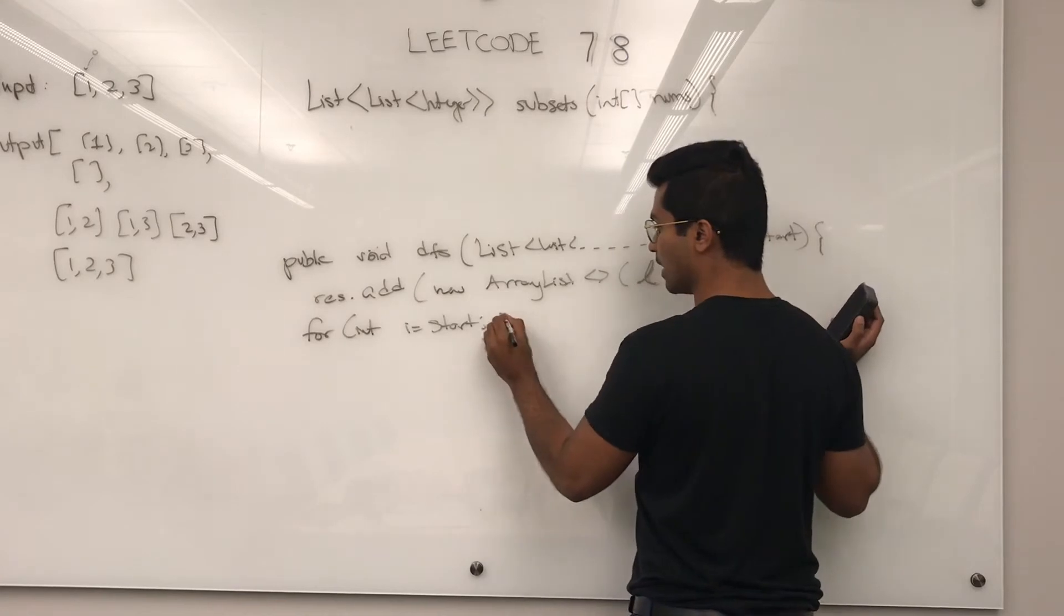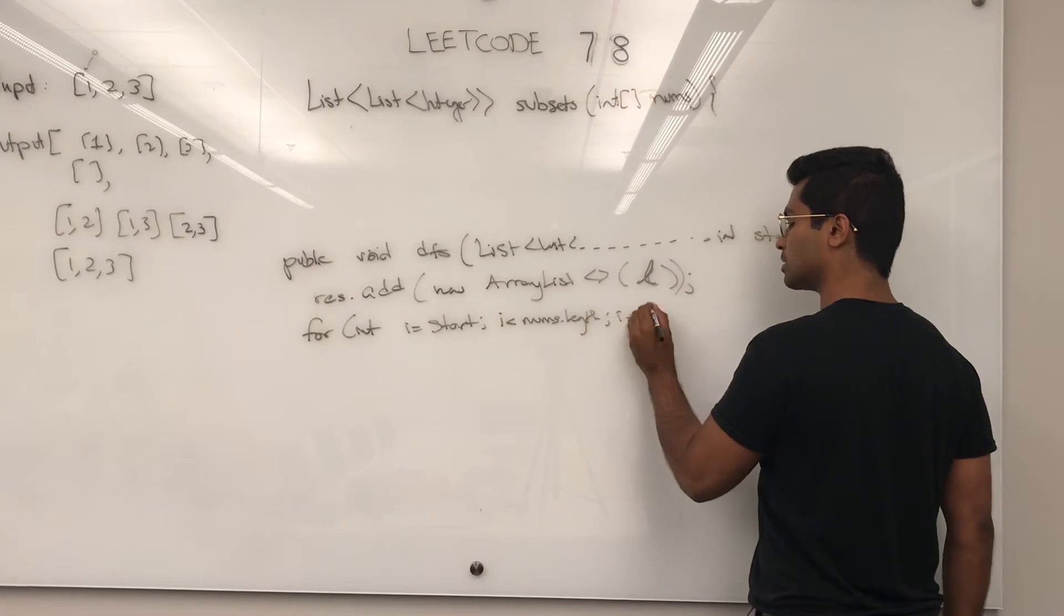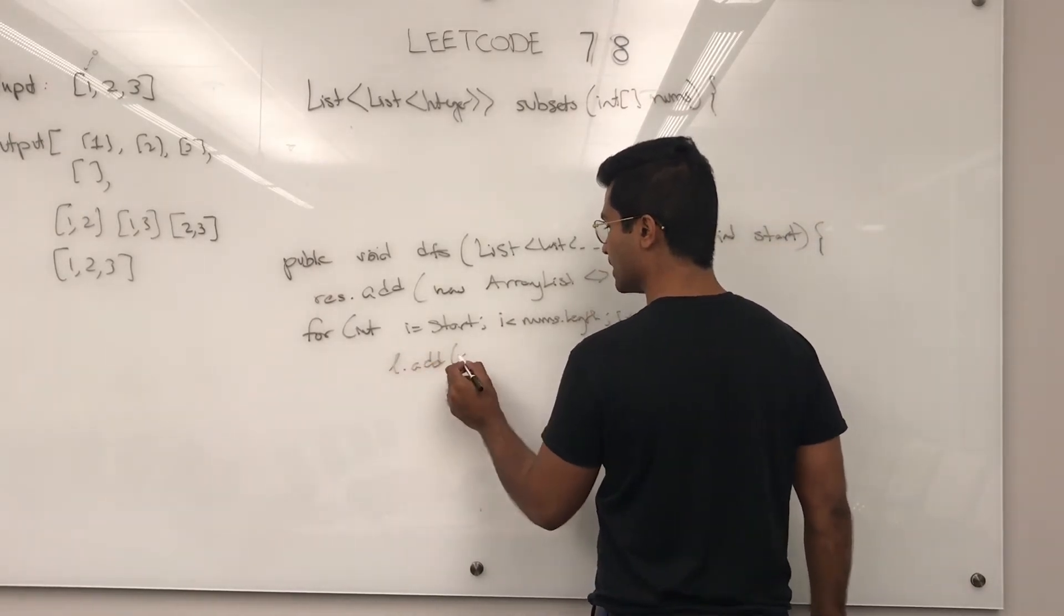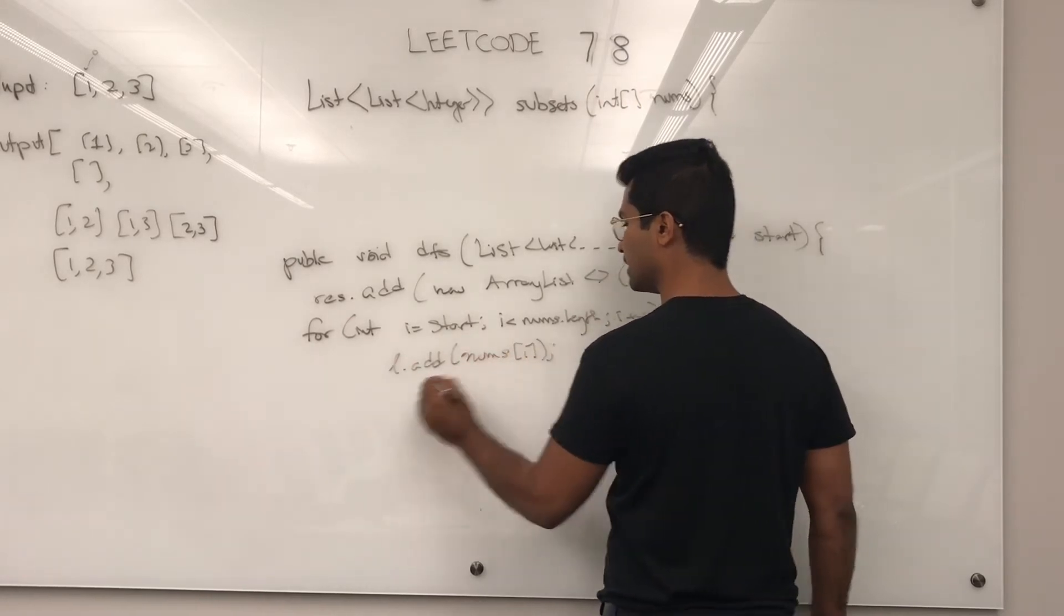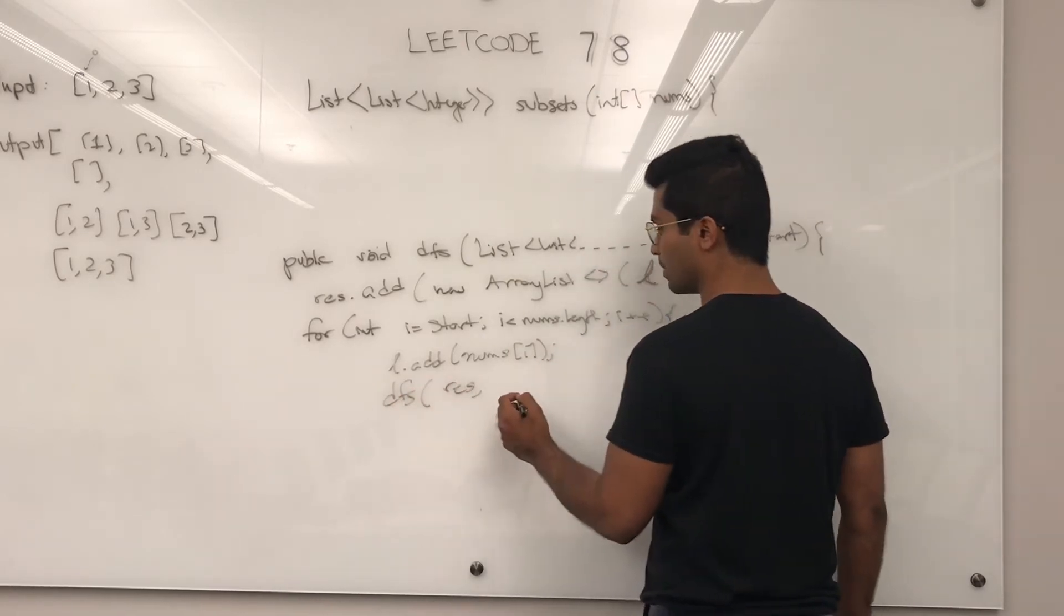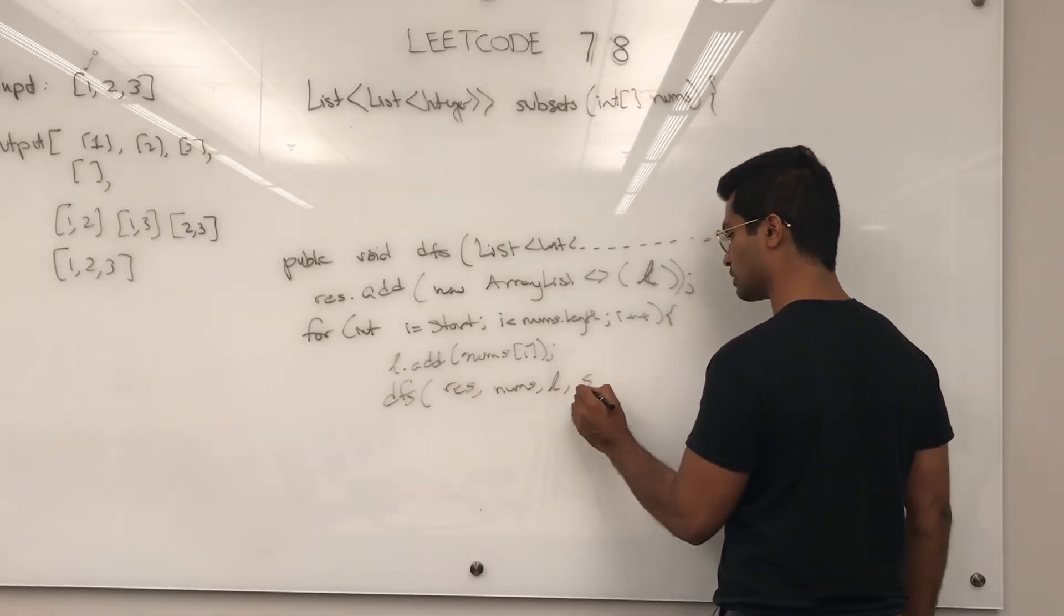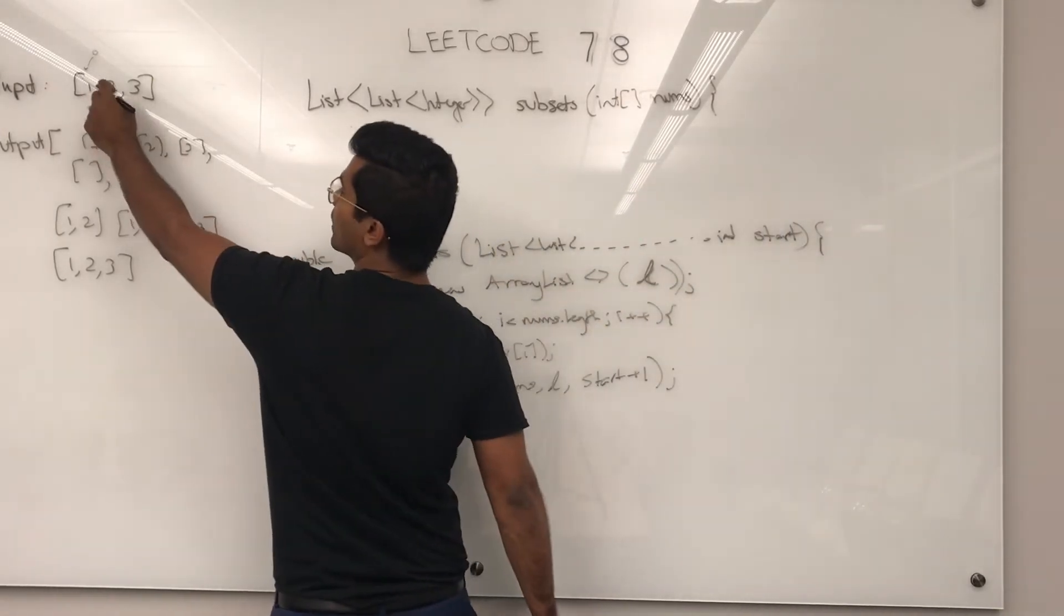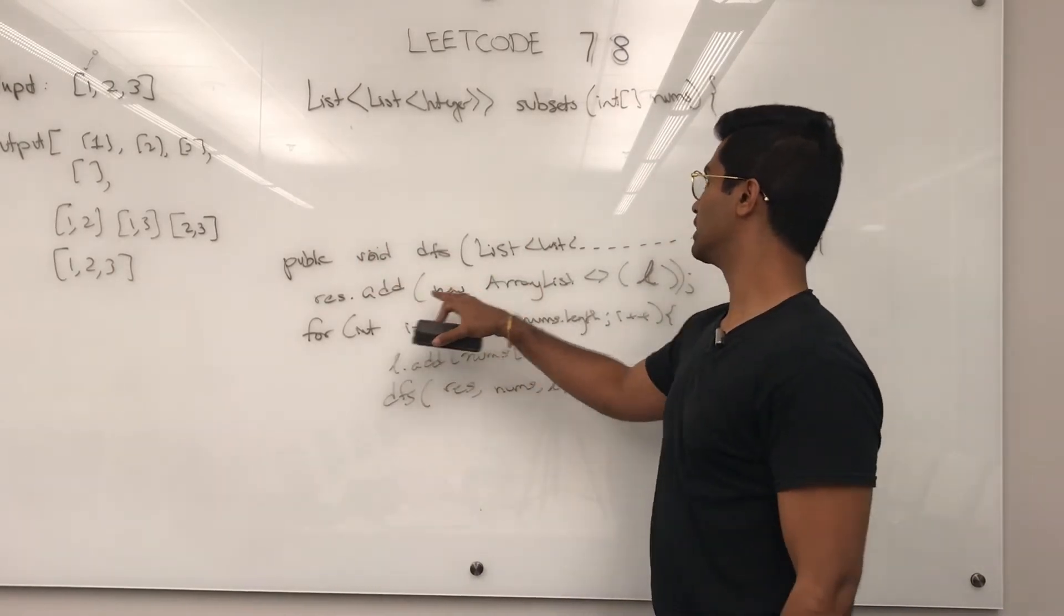Now int i is equal to start, i is less than nums dot length, i plus plus. Now we're going to do l dot add, this guy nums of i, then recursively call this DFS, we're going to pass in res, we're going to pass in nums, we're going to pass in l, and we're going to pass in start plus one, which is going to be zero plus one, because next one we're going to get two separately.